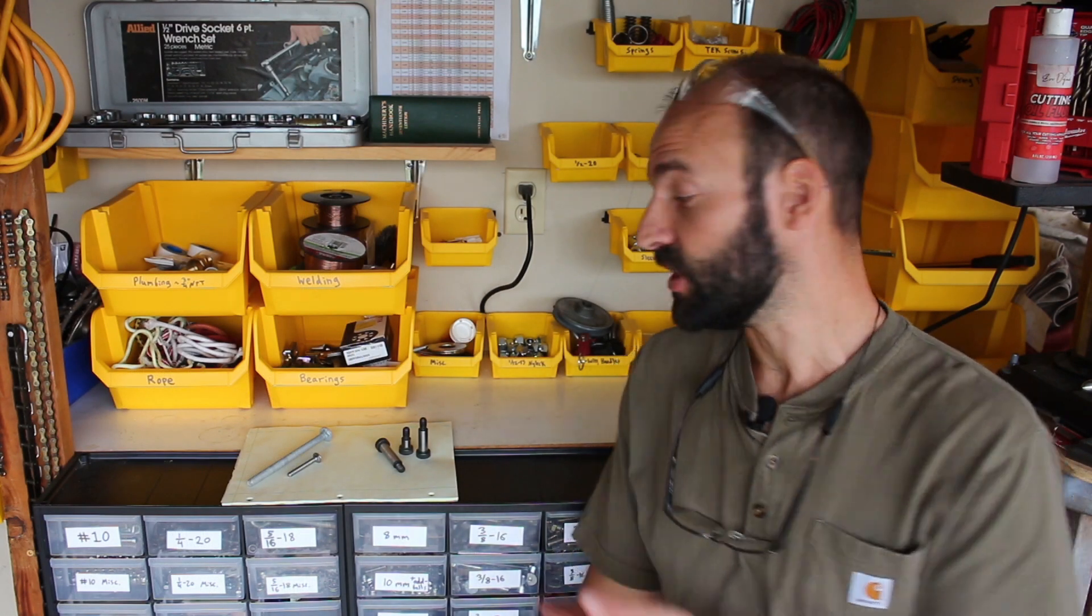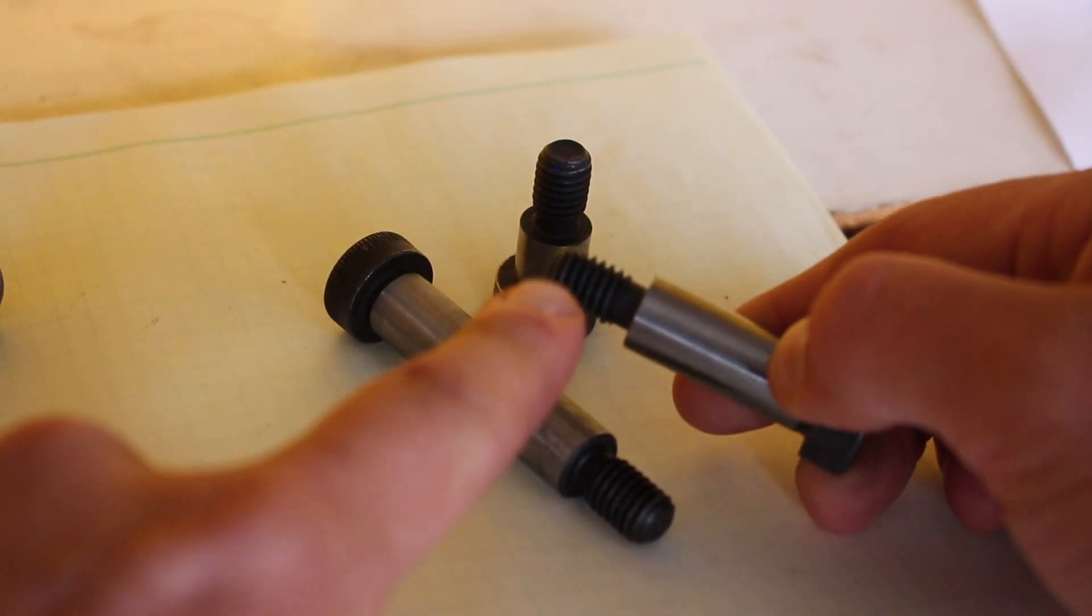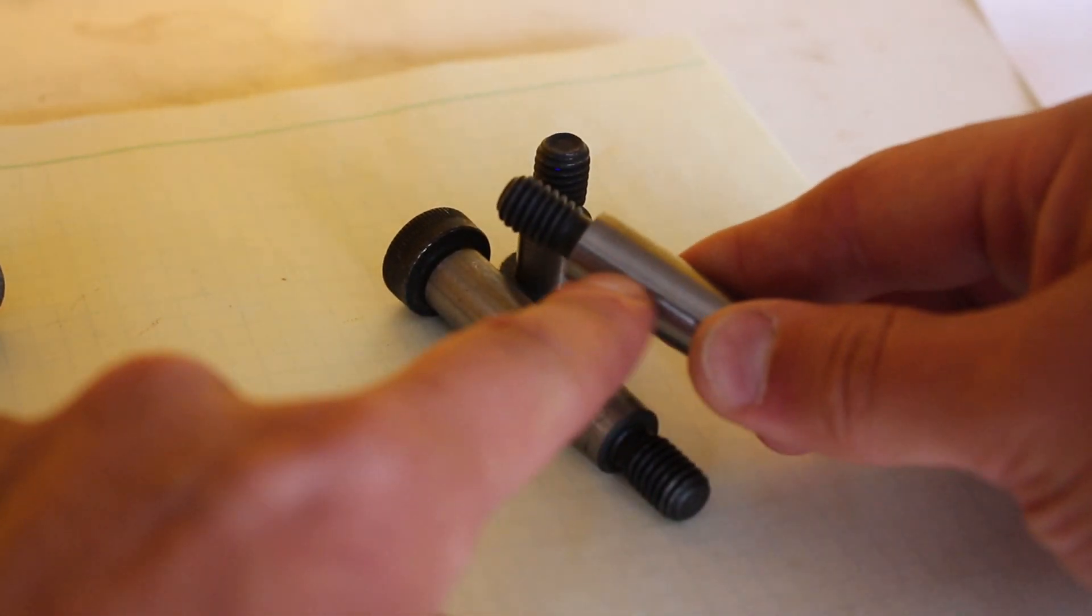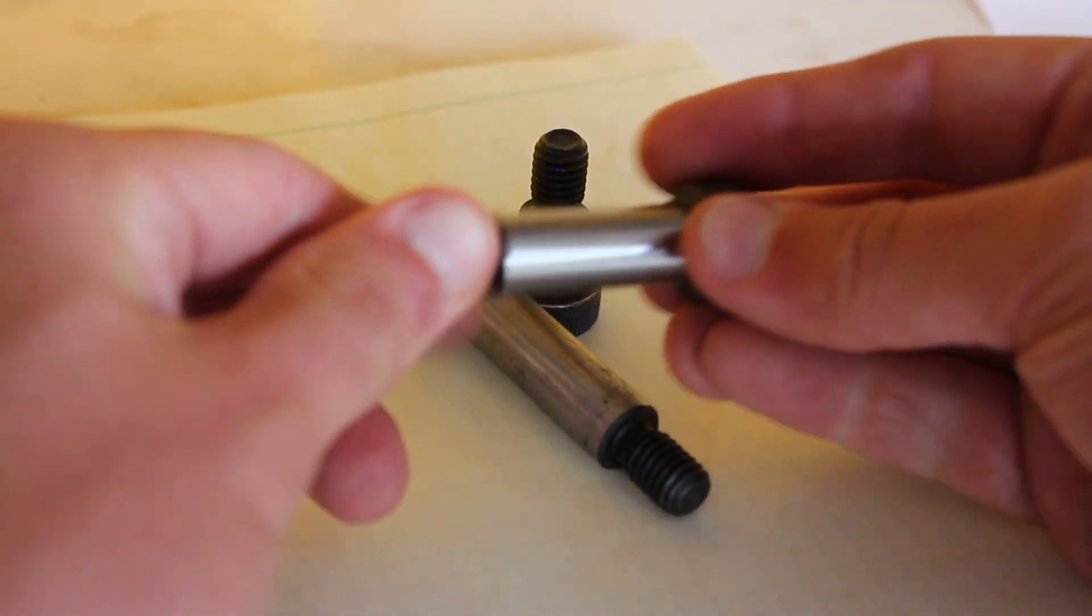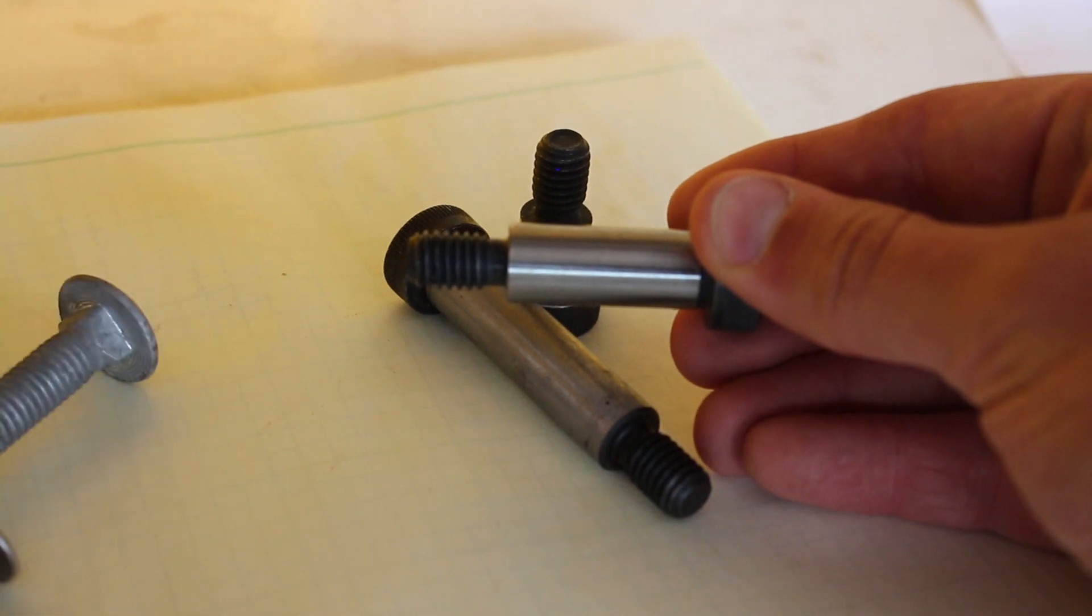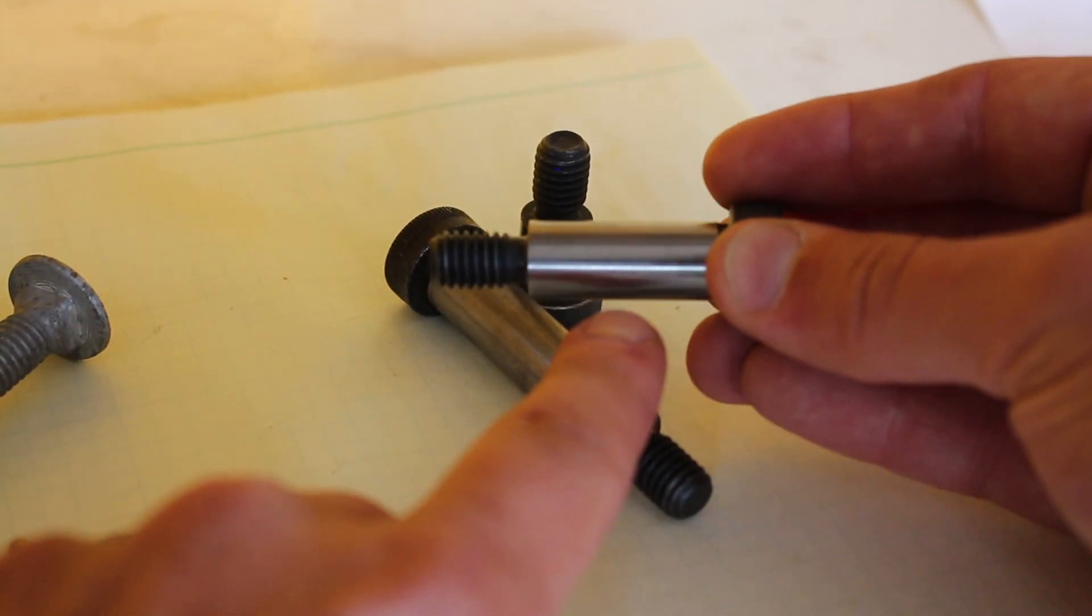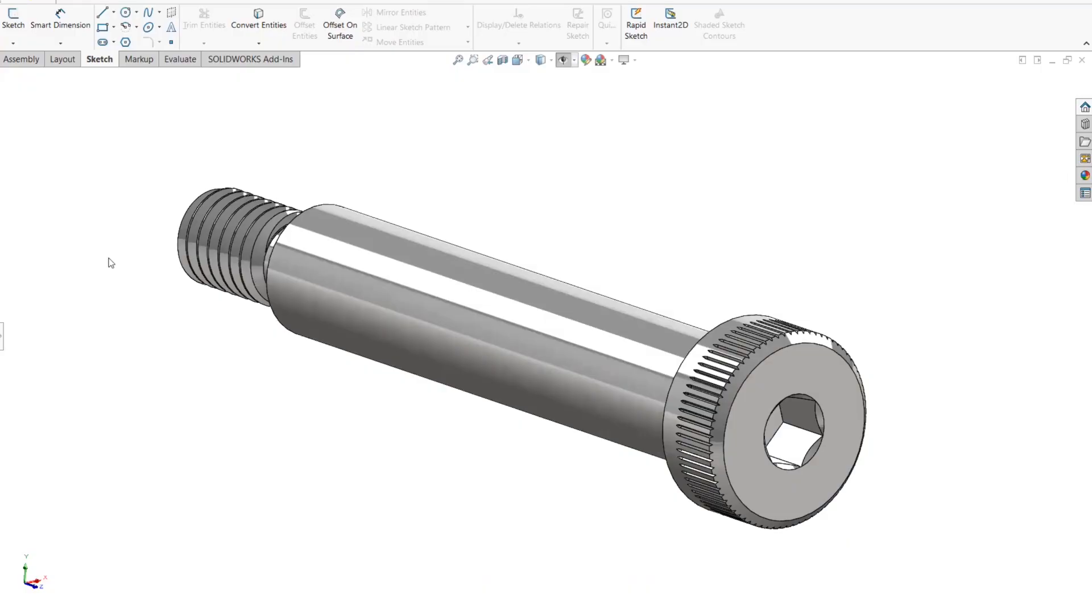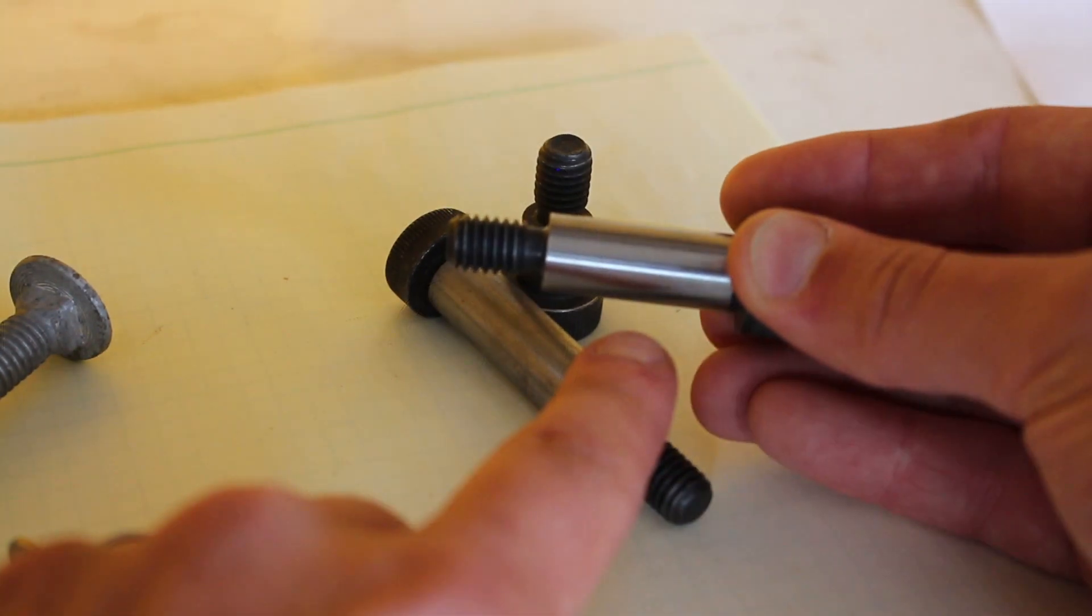The other fastener we need to talk about is the shoulder bolt. Shoulder bolts have a shoulder between a threaded portion and a pin portion. This nice, smooth shank is tightly toleranced, and you can even buy them to be super tightly toleranced. It is up to the designer how you use that smooth shank. It can be used as an axle for a wheel, as a locating dowel, or just a pin.